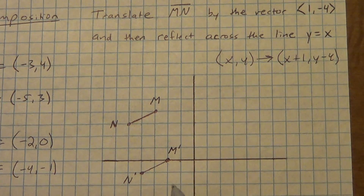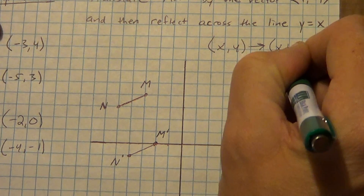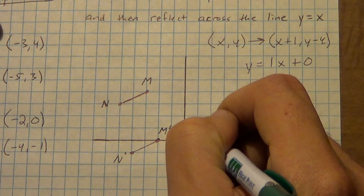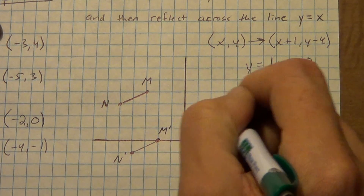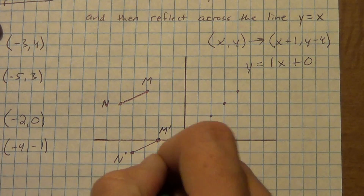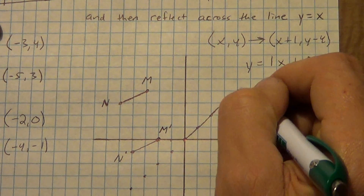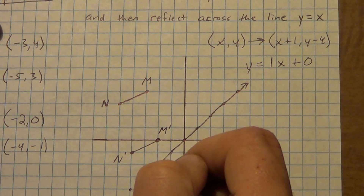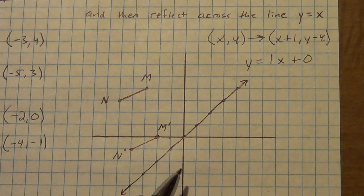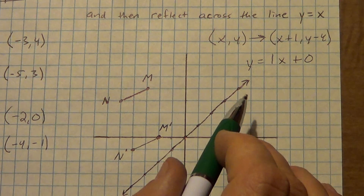Now we need to reflect across the line y equals x. First we have to know where that line is. In slope-intercept form it's y equals 1x plus 0 — it goes through the origin with a slope of 1. So up 1, right 1, up 1, right 1... it moves up to the right. Let's draw that line. Now, to reflect across it, remember you have to travel the same distance perpendicular. Since this slope is 1, perpendicular means opposite reciprocal, which is negative 1.